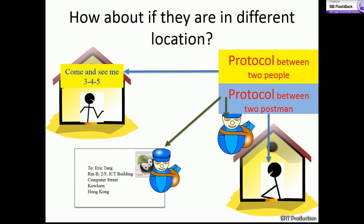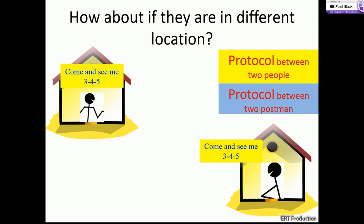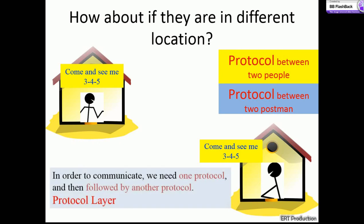Therefore, in this communication, we need another protocol, the protocol between two post offices or the protocol with the postal service, and the message can then be sent successfully to the other side. In conclusion, in order to communicate, we need one protocol and then followed by another protocol. We call this protocol layer.